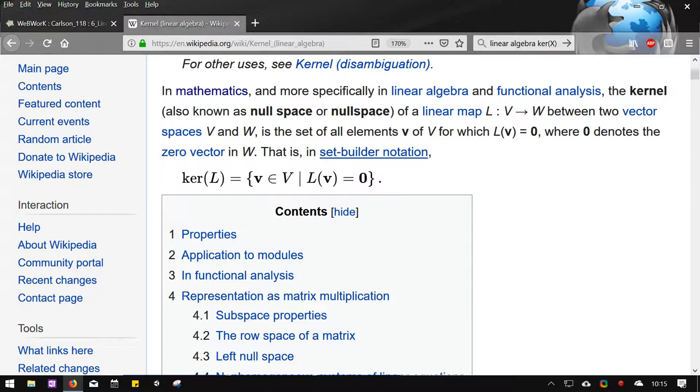And zero, of course, is the zero vector in W. So the set builder notation, I think, is the most useful one right here. I'm going to use this set builder notation.